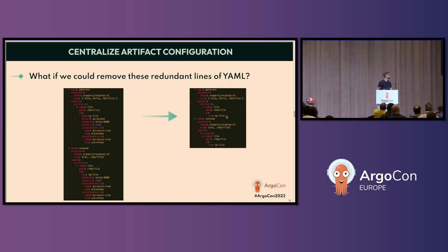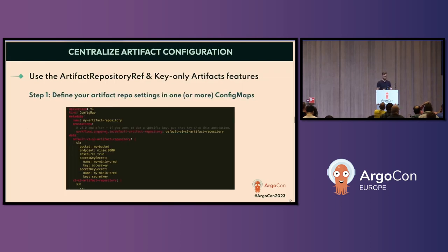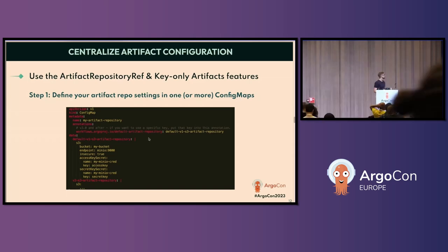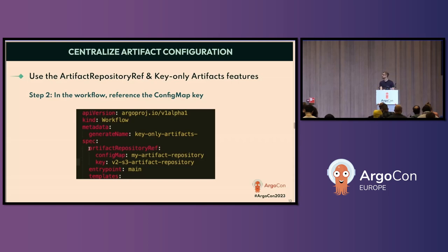What if we could consolidate all of that down to something very small, and move out all that common configuration? Now our S3 information is really just the key itself — that's the thing that's actually likely to be different between workflows and between artifacts within a workflow. We can move all that other information out somewhere else. This is actually also a concept called key-only artifacts.